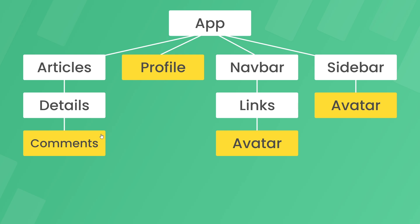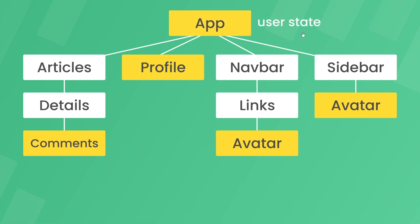So how would we manage that state and where would we store that global user state? We wouldn't want to define the state in every component that uses it, because then we'd have to manually update it in each of those components if it changes. So we'd have to lift that state up to a component which is a common ancestor — in this case inside the root App component — and then pass that user state down as a prop to any component that uses it.